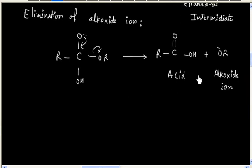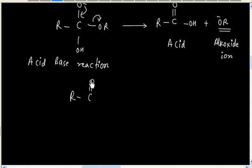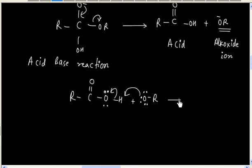In the next step, we have deprotonation of the acid and protonation of the alkoxide ion — simply an acid-base reaction. The acid gets deprotonated. The alkoxide ion is more basic, so it will abstract a proton from the acid, and we will have carboxylate anion and alcohol.